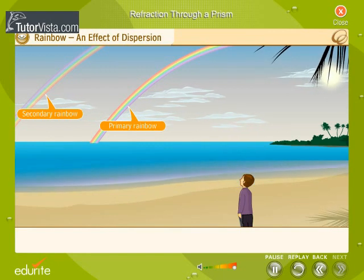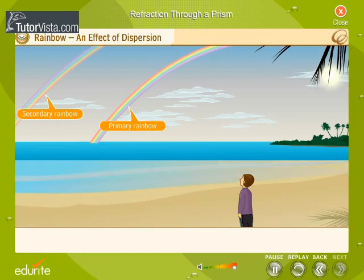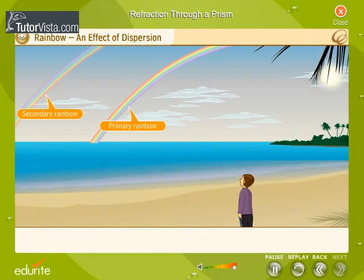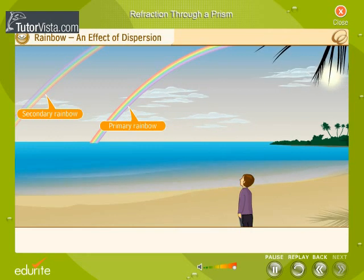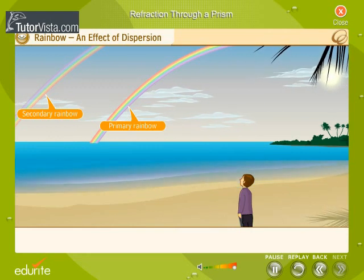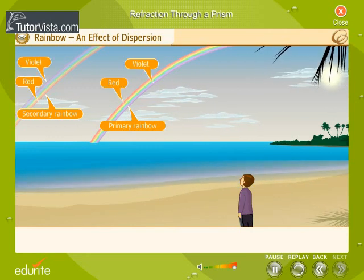Secondary rainbows are caused by double reflection of sunlight inside the raindrops. As a result of the second reflection, the colors of a secondary rainbow are inverted compared to the primary bow.